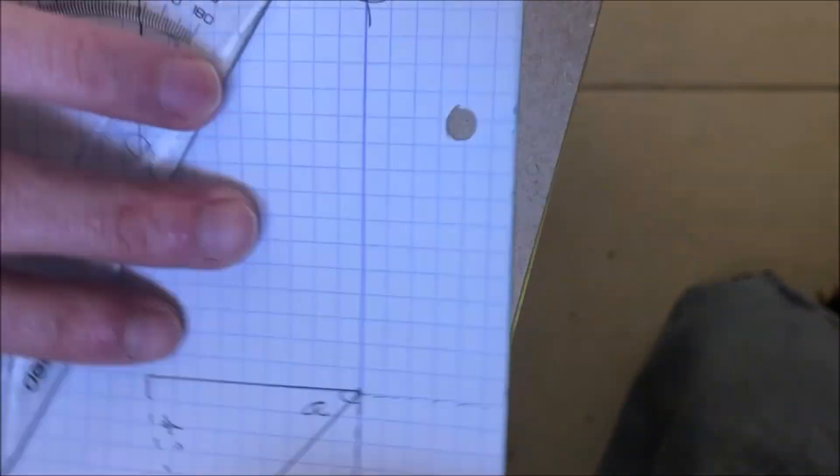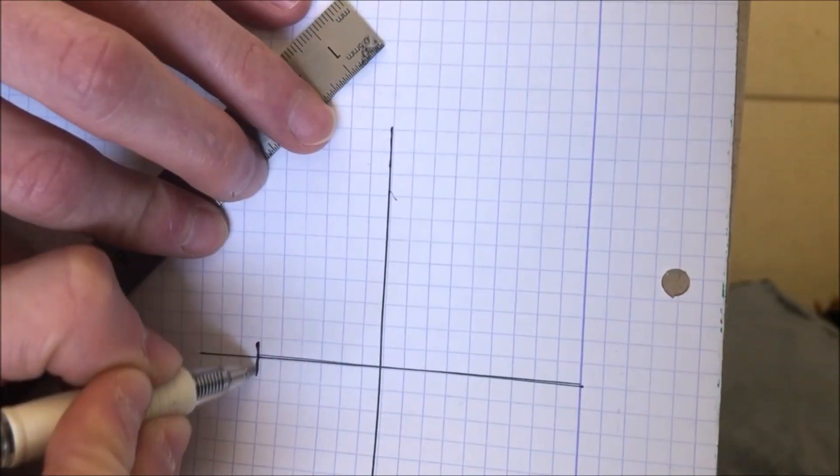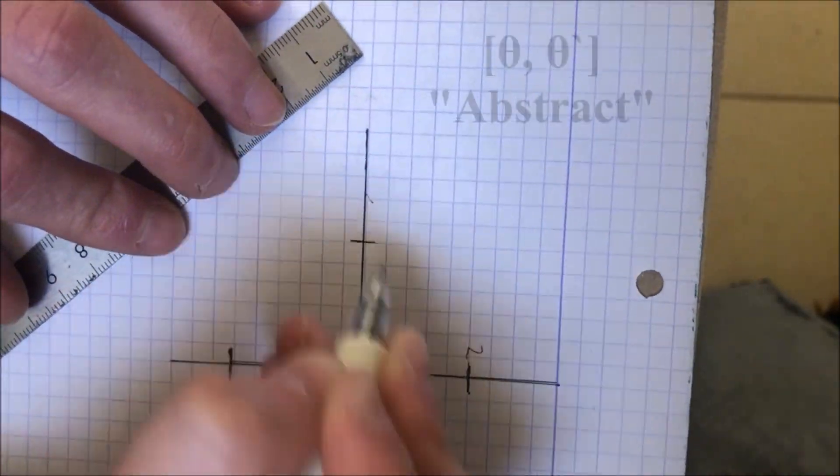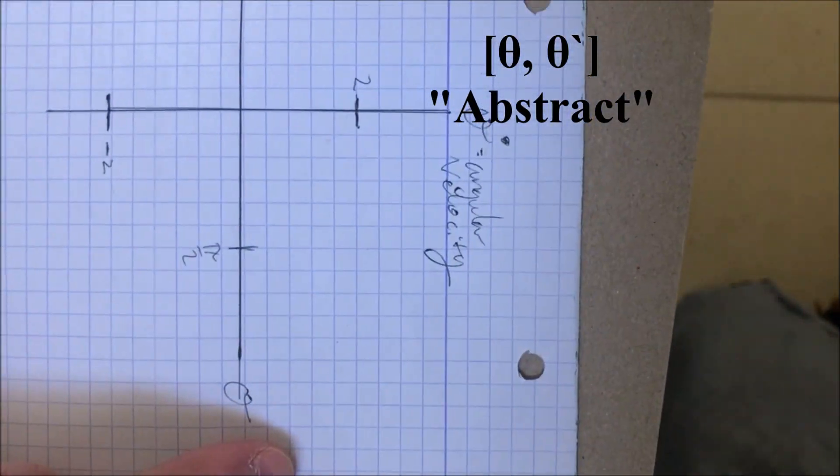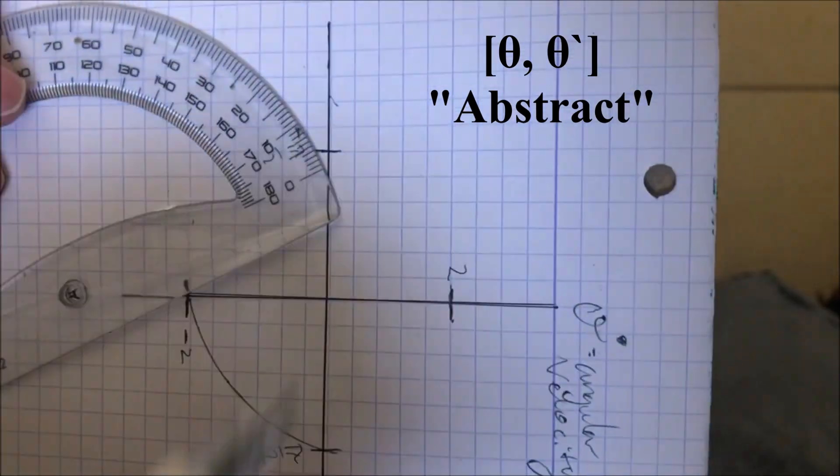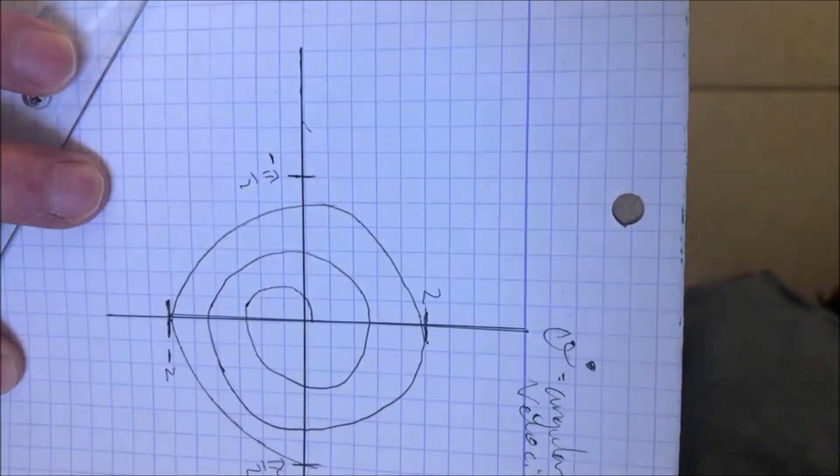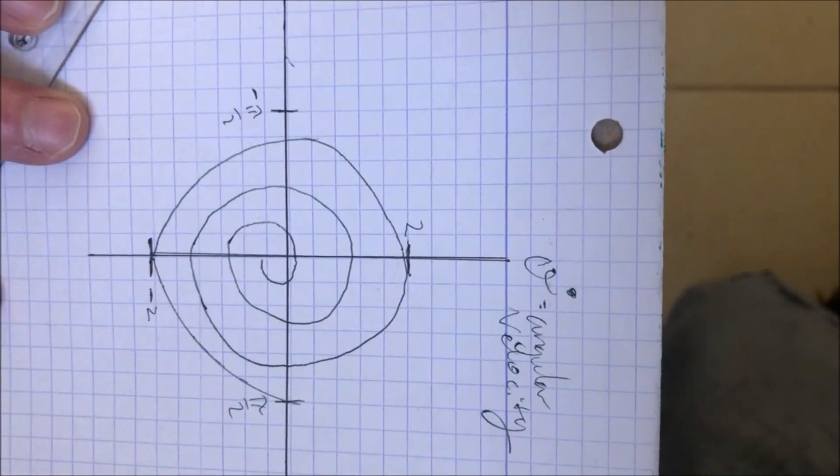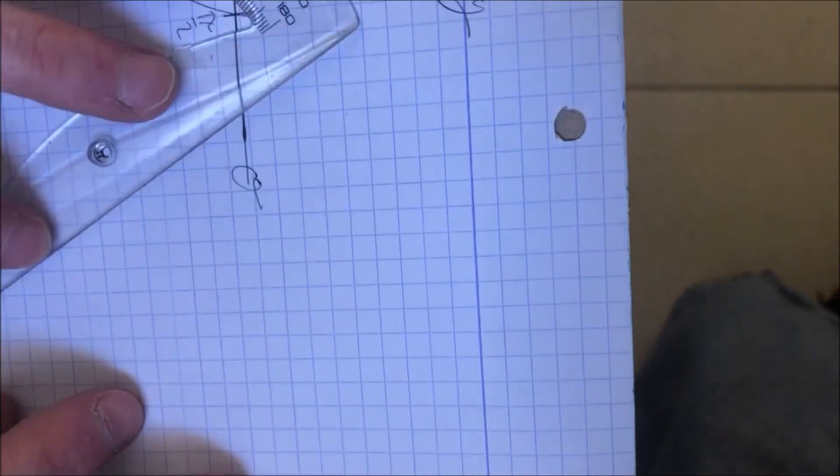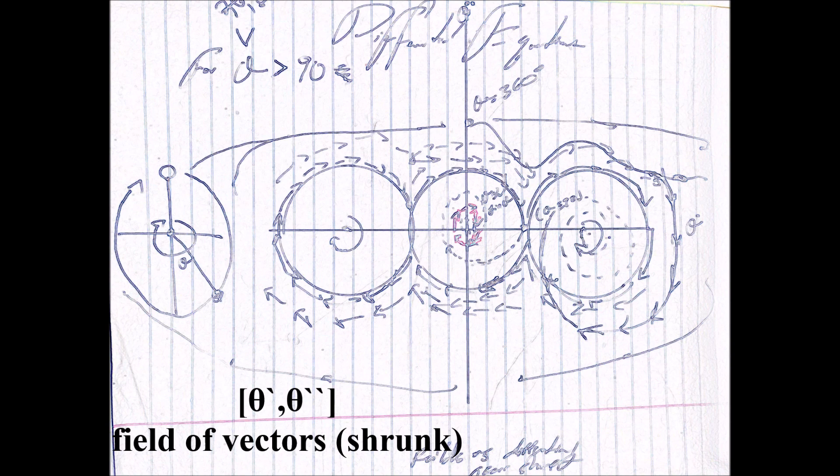The second graph is the first derivative of that, theta theta dot, which is called the quote-unquote abstract graph. The third graph that we sketch is the second derivative, shrunken vector field equation graph. And that is because it is a second-order differential equation.